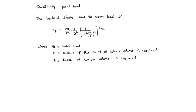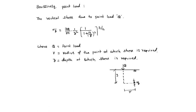Here the figure is like this: suppose this is the surface, and the Point Load Q is acting on it. Stress is required at a point which is R distance radially outward and Z distance below the load. That is where Sigma Z is required.